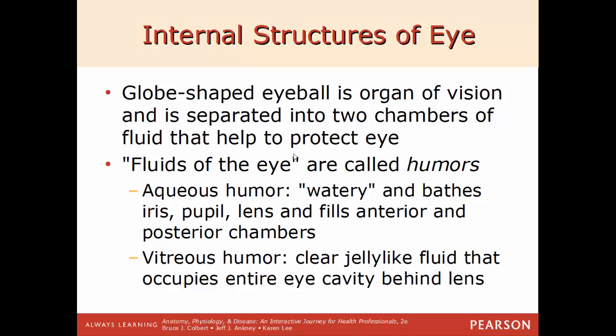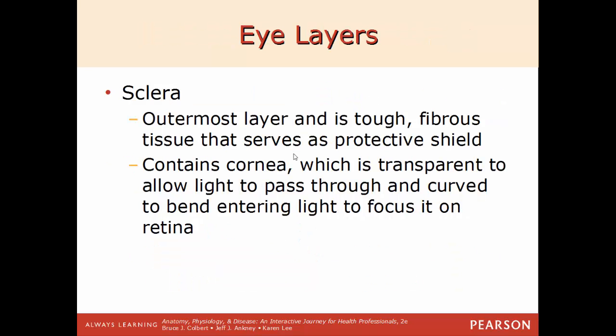Moving to the internal parts of the eye: the globe-shaped eyeball is the organ of vision and has two separate chambers filled with different humors or fluids — in anatomy, 'humor' means fluid. The aqueous humor is found in the anterior chamber at the front of the eyeball and bathes the iris, pupil, and lens. The vitreous humor is a clear, jelly-like fluid that occupies the entire eye cavity just behind the lens.